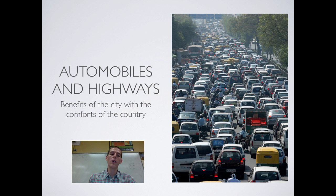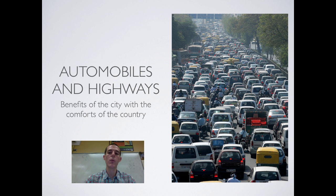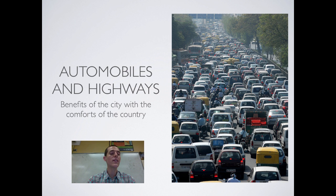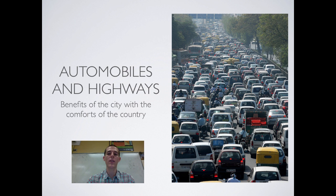The first driver of urban sprawl is automobiles and highways. When highways started being built in the 1950s and 60s and cars became more readily available, for the first time in history people were able to get the benefits of living in the country — a larger house in a quiet suburban neighborhood — while still working in the city. You could drive in, spend your day working in your office, then drive out to your quiet big house in the country. Automobiles and highways made that transition back and forth easy, making it feasible to build and live out in the suburbs.